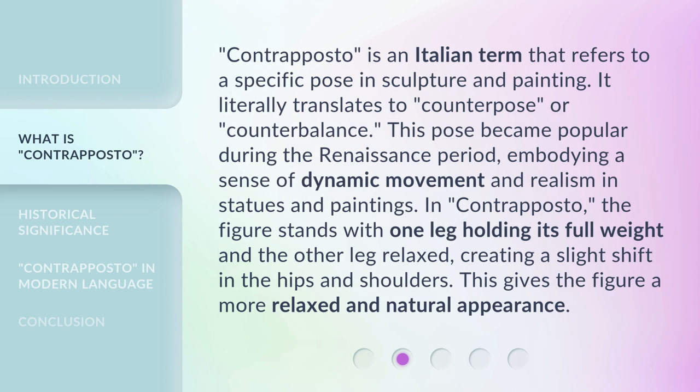Contrapposto is an Italian term that refers to a specific pose in sculpture and painting. It literally translates to 'counterpose' or 'counterbalance.' This pose became popular during the Renaissance period, embodying a sense of dynamic movement and realism in statues and paintings. In Contrapposto, the figure stands with one leg holding its full weight and the other leg relaxed, creating a slight shift in the hips and shoulders. This gives the figure a more relaxed and natural appearance.